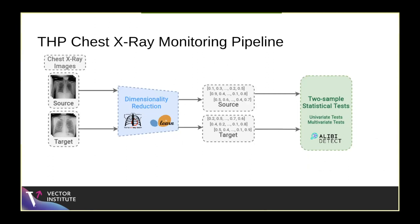This is an overview of the monitoring pipeline we set up for THP — just an experimental workflow. Basically two-sample tests using the chest X-rays, but first we pass them through a dimensionality reduction technique. We use a variety of techniques; some work best. We use the TorchXRayVision library, which has pre-trained models capable of reducing dimensionality of chest X-ray images, and also scikit-learn with standard dimensionality reduction like PCA.